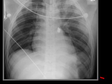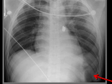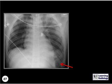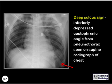What sign is being demonstrated here? This is the deep sulcus sign, which is the inferiorly depressed costophrenic angle from a pneumothorax seen on a supine radiograph of the chest.